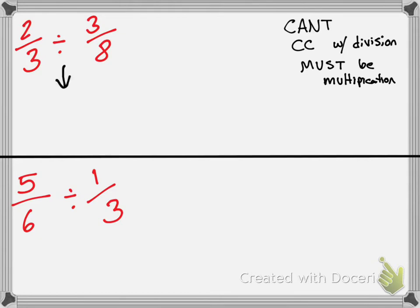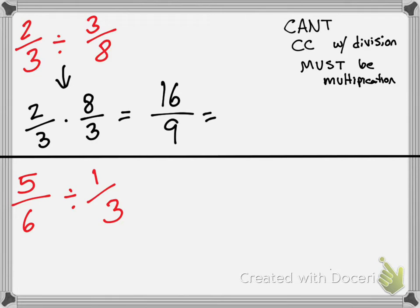Lucas, tell me the multiplication version of two-thirds divided by three-eighths. It's two-thirds times eight over three. Can I cross-cancel anything? No. Camilla, what's the answer? You get sixteen over nine, which is also equal to one and seven-ninths, because nine goes into sixteen one time. When I take nine out of sixteen, I get seven. So my answer is one and seven-ninths.